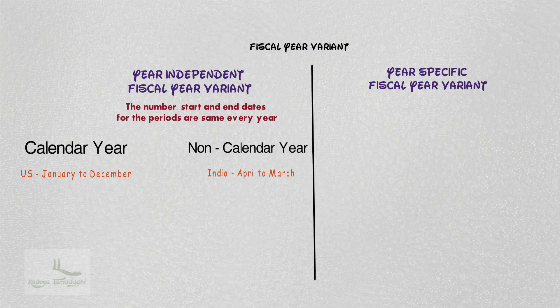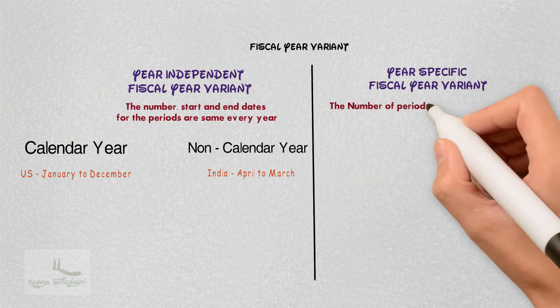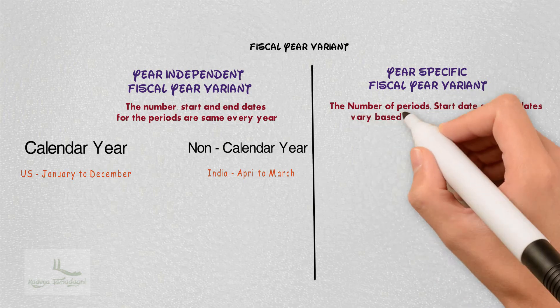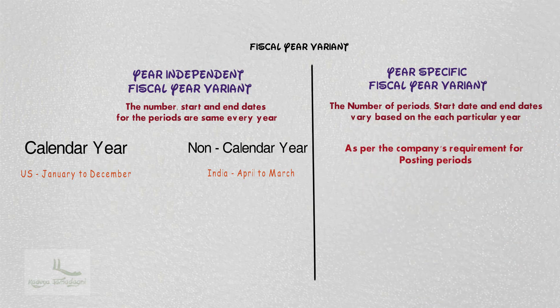Hence the number of periods, start and end dates are the same, but the only difference is its start and end dates do not follow the calendar year. In the case of year-specific fiscal year variant, periods can vary from year to year, so the number of periods, start date and end dates vary based on each particular year.